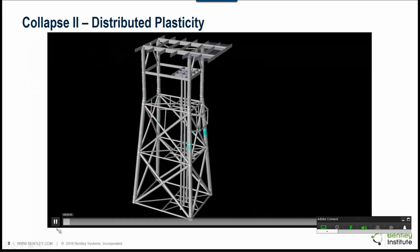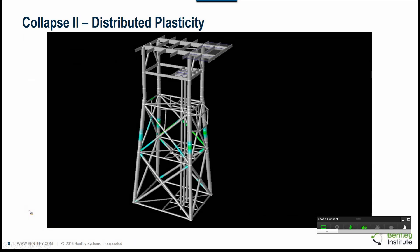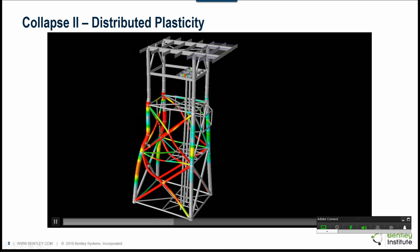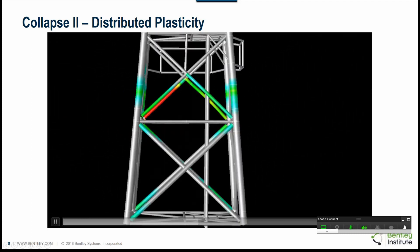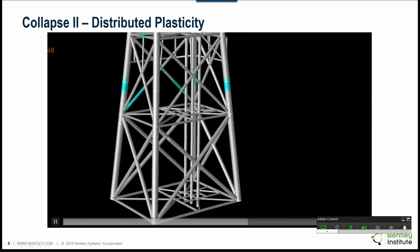This slide here shows a pushover analysis and basically shows the way collapse allows for the plastic hinge formation anywhere along the member. You can see here that the plasticity is actually spread across the members and not confined to the centers and the end of the member as predicted by other programs out there.